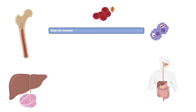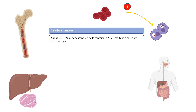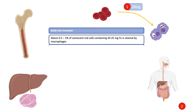In a day, about 1% of red cells which are senescent — meaning red cells which are at the end of their life — are destroyed by splenic macrophages. About 20 to 25 mg of iron is recycled from splenic clearance and re-enters the circulation. There is no excretory mechanism for iron, which emphasizes how iron is so vital to the body that it needs to be conserved.